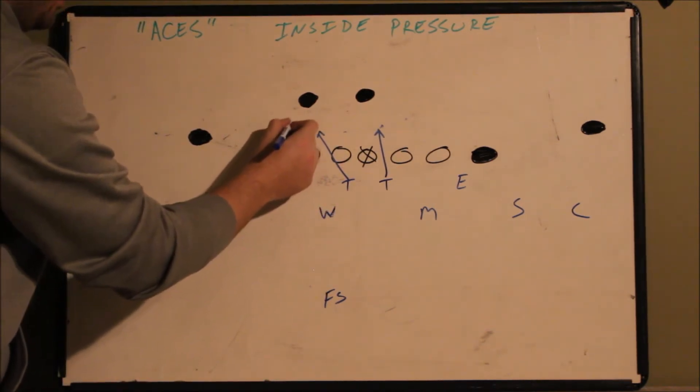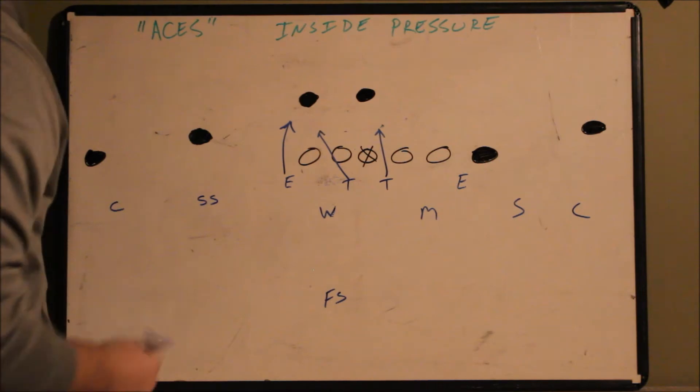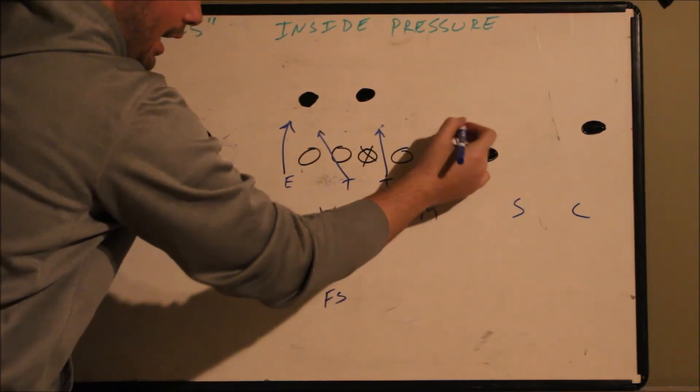This defensive end is going to have C. He's going to be the primary contained player on this side. This defensive end is going to have C.